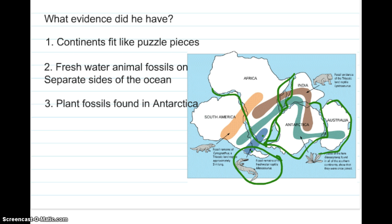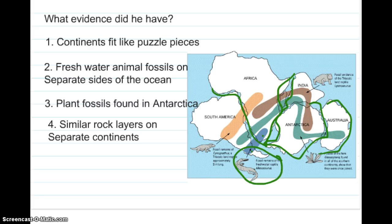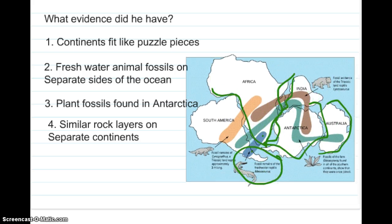They found plant fossils in Antarctica — specifically, fossils of a tropical plant in a very cold climate where plants don't survive. They also found similar rock layers on separate continents, such as South America and Africa, showing that they had once been joined together and broke apart, because those rock layers formed while they were still connected.